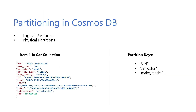Partitioning is the way in which we horizontally scale the data in our database. As a user, it is important to keep in mind how your data is partitioned for scalability, throughput, and performance. Partitioning is made up of two main concepts: logical partitions and physical partitions. These partitions allow you to group a set of items or data in your collection by a similar property, also known as partition key.